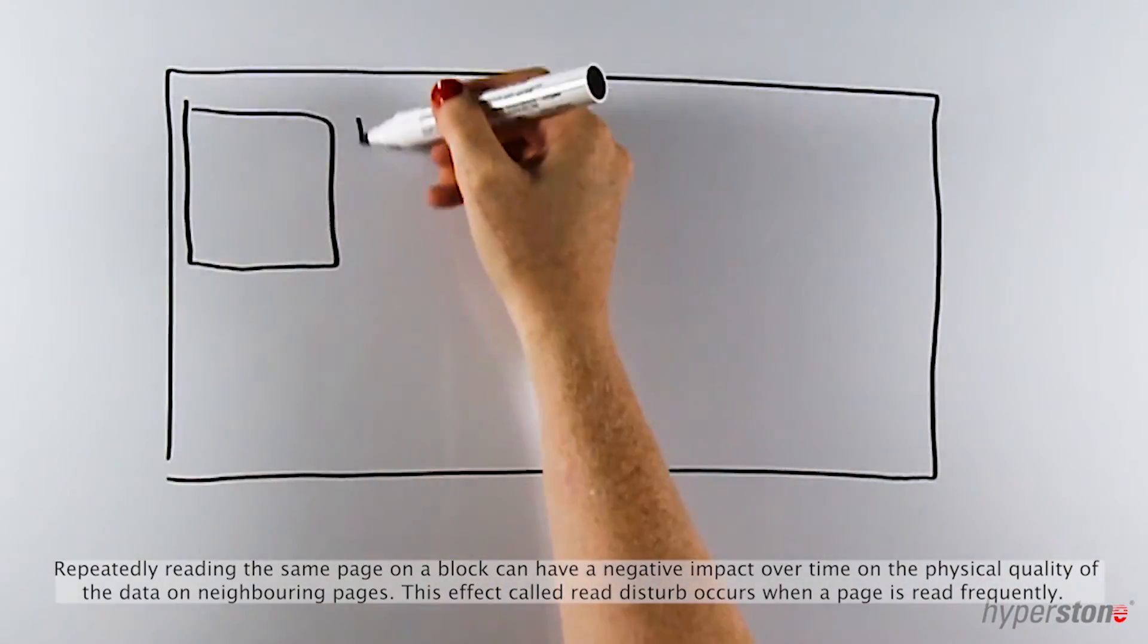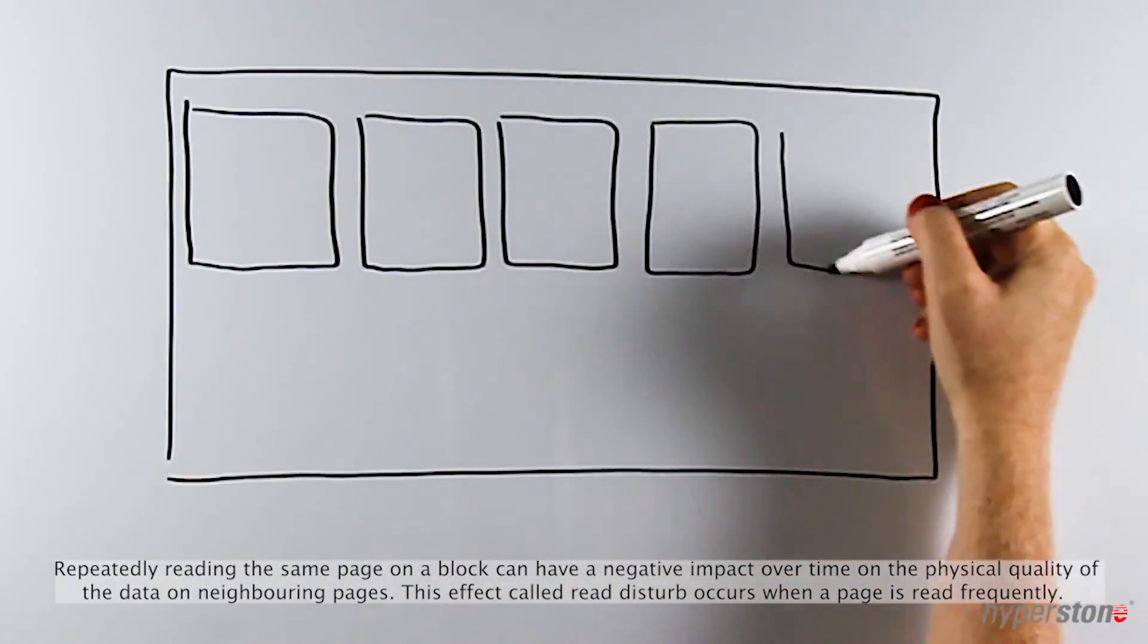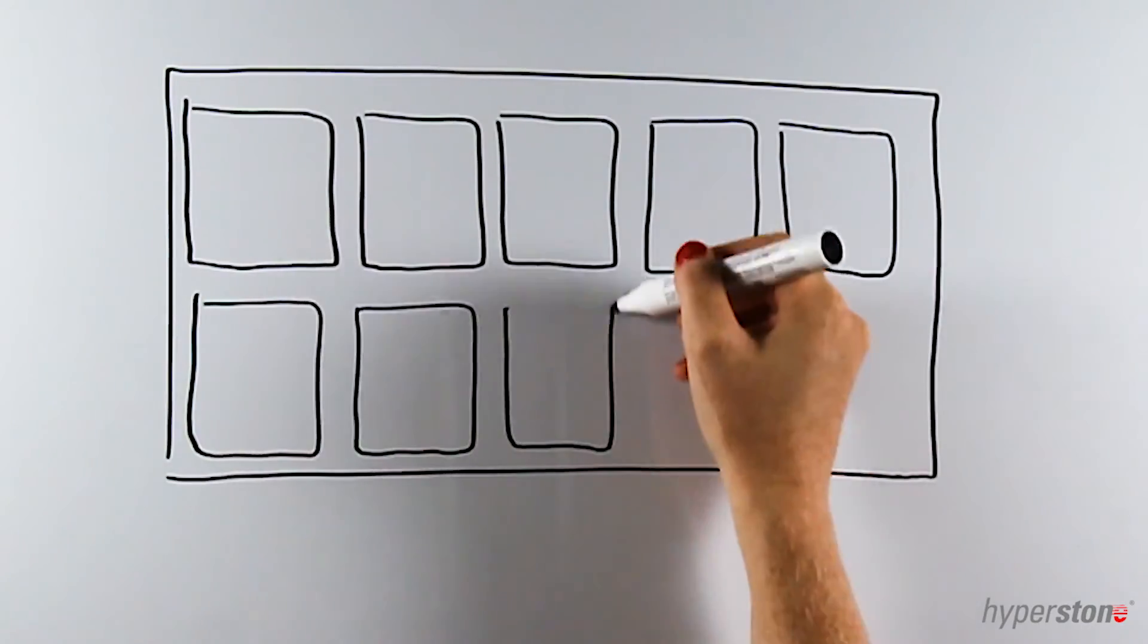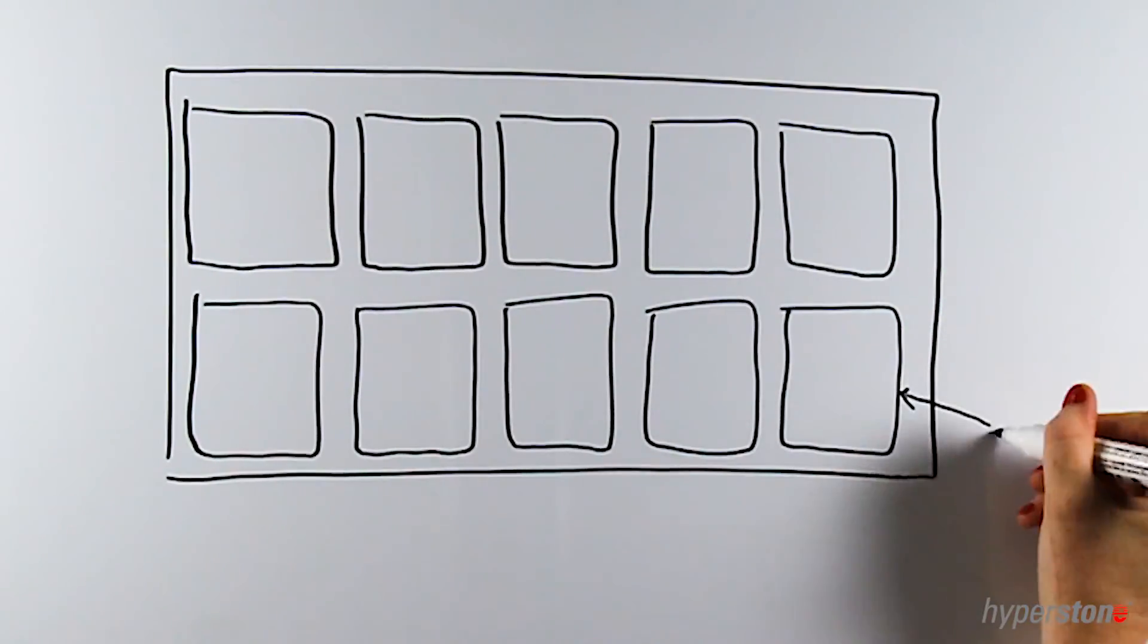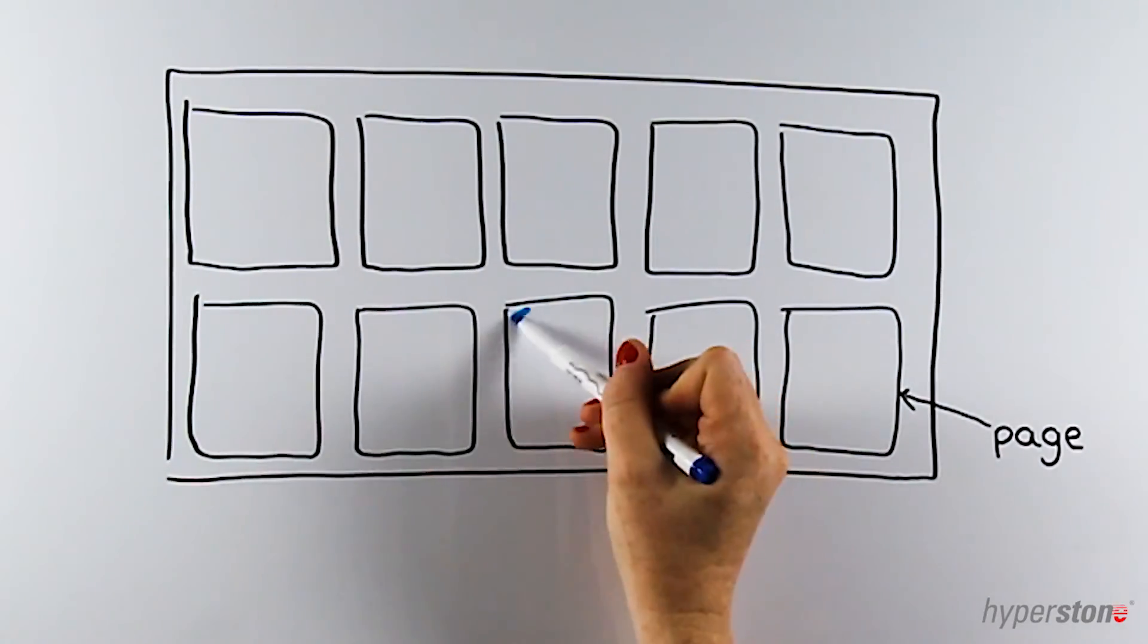Repeatedly reading the same page on a block can have a negative impact over time on the physical quality of its neighboring pages. This effect is called read disturb and it occurs when a page is read frequently.